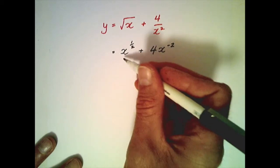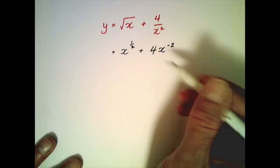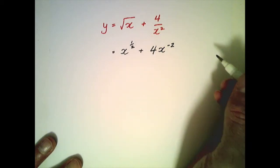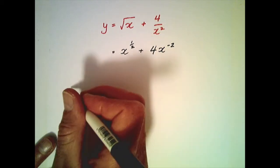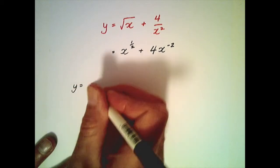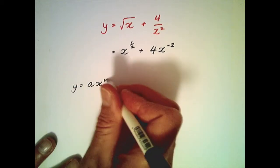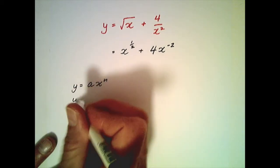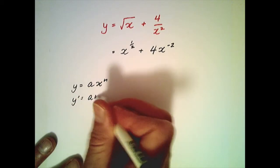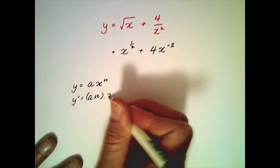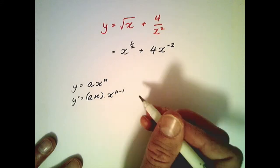You'll notice now that both parts of this expression are in a form which matches our original formula, and that formula states that if y equals a multiplied by x to the n, the derivative is a multiplied by n and x has a power that's dropped by 1.